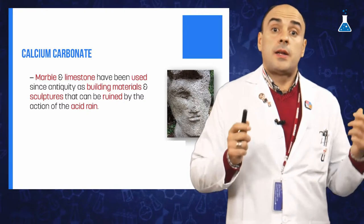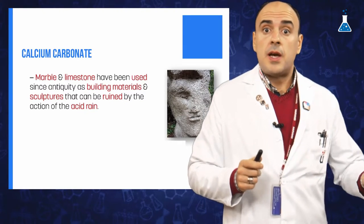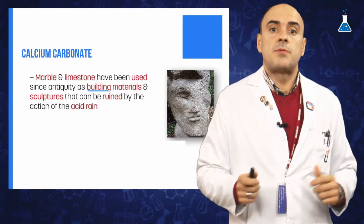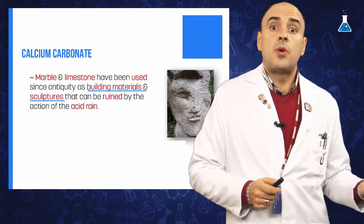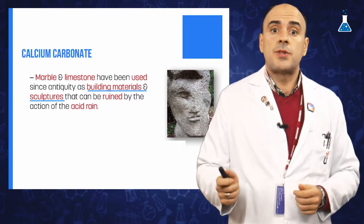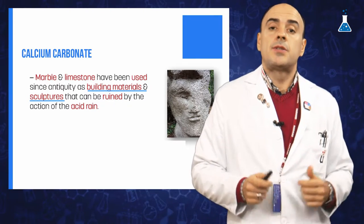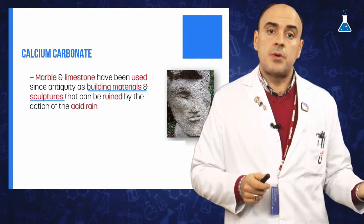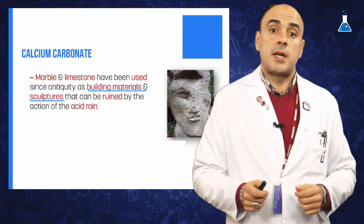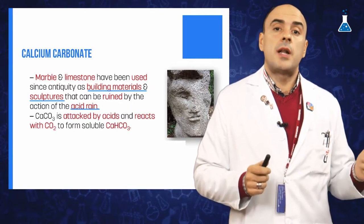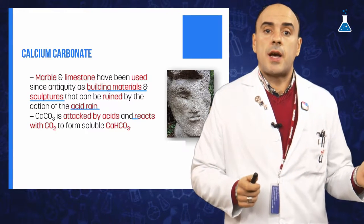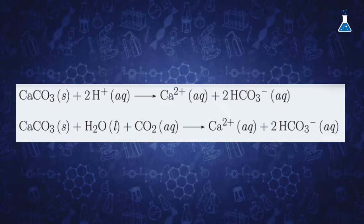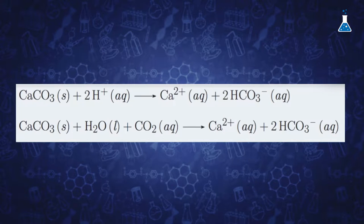Since antiquity, marble and limestone have been used as building materials and for sculptures, although these constructions have the problem of being susceptible to attack by acid rain, because calcium carbonate readily reacts with acid according to the following equilibria.